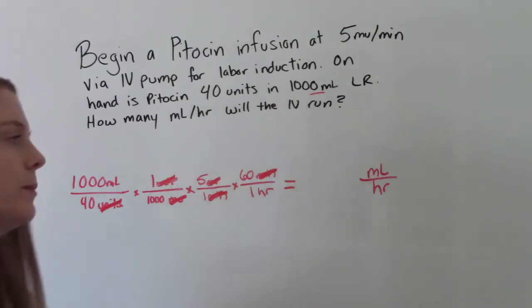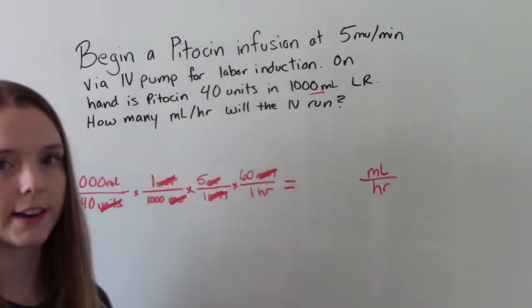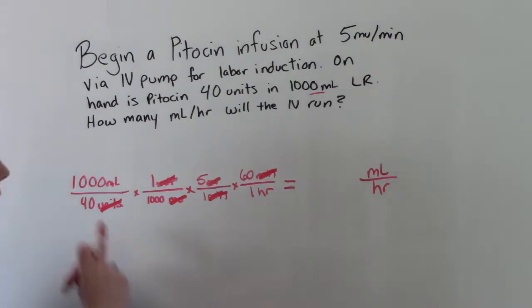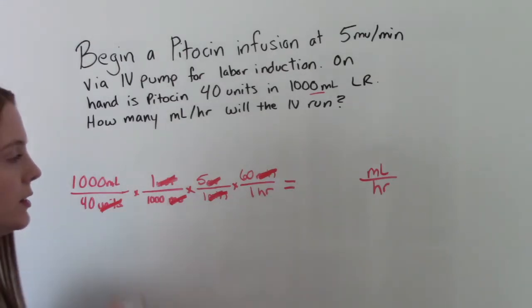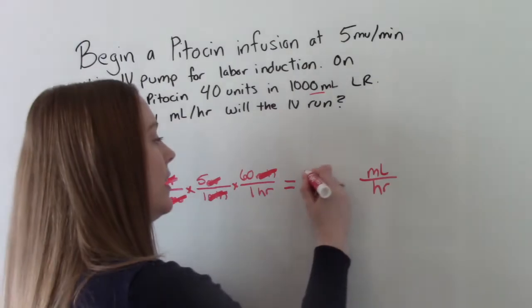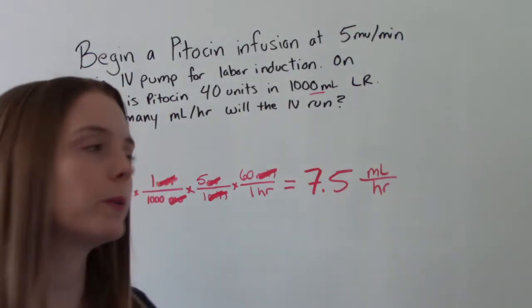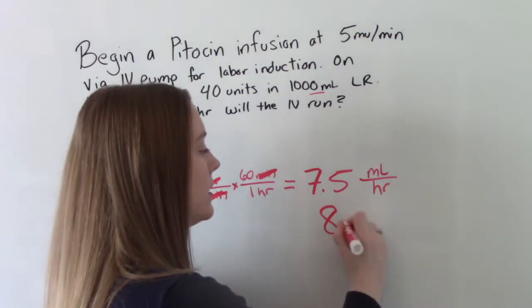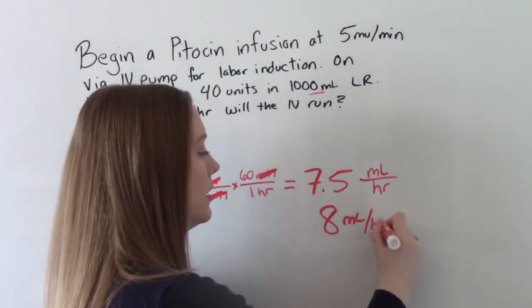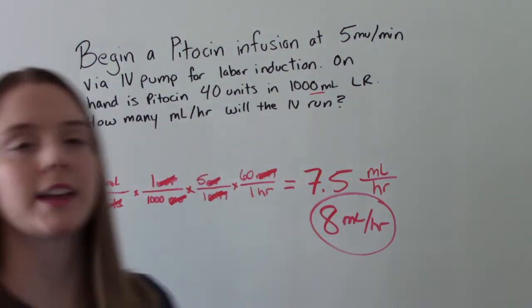Then we have to do the math. So you have to multiply 1,000 times 5 times 60 and then divide that by 40 times 1,000 times 1. And what you should get is 7.5. But typically what we would do is round it to 8. So 8 mLs an hour. That's how we should set the pump.